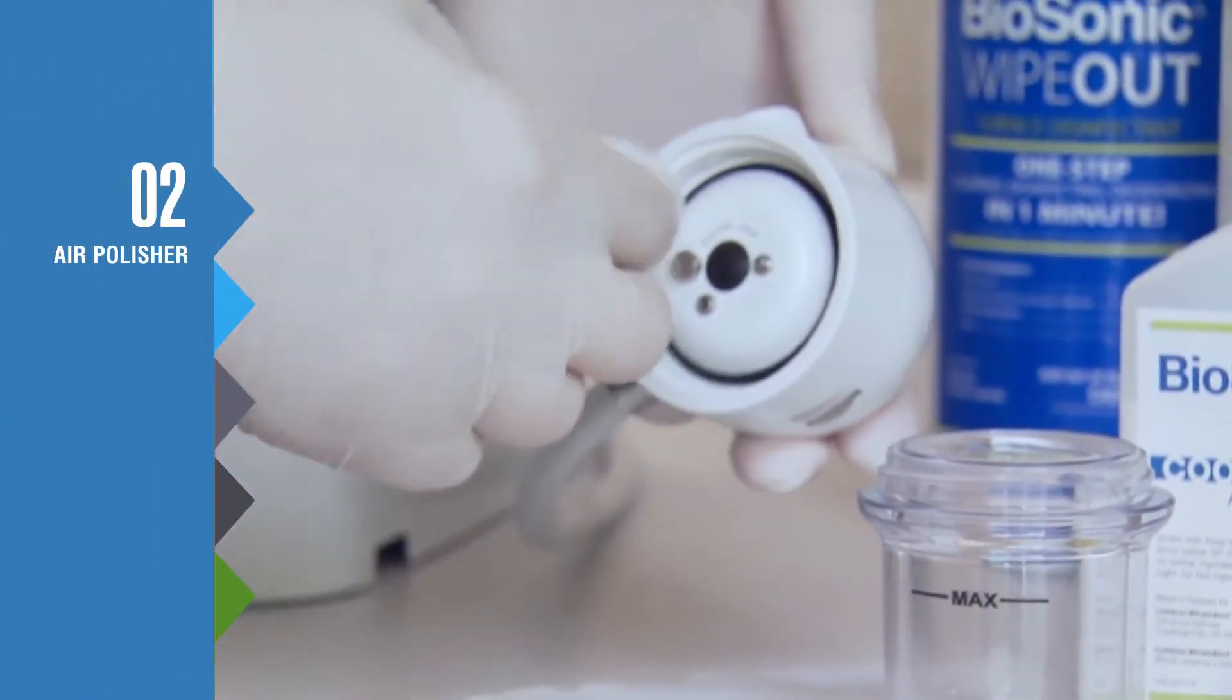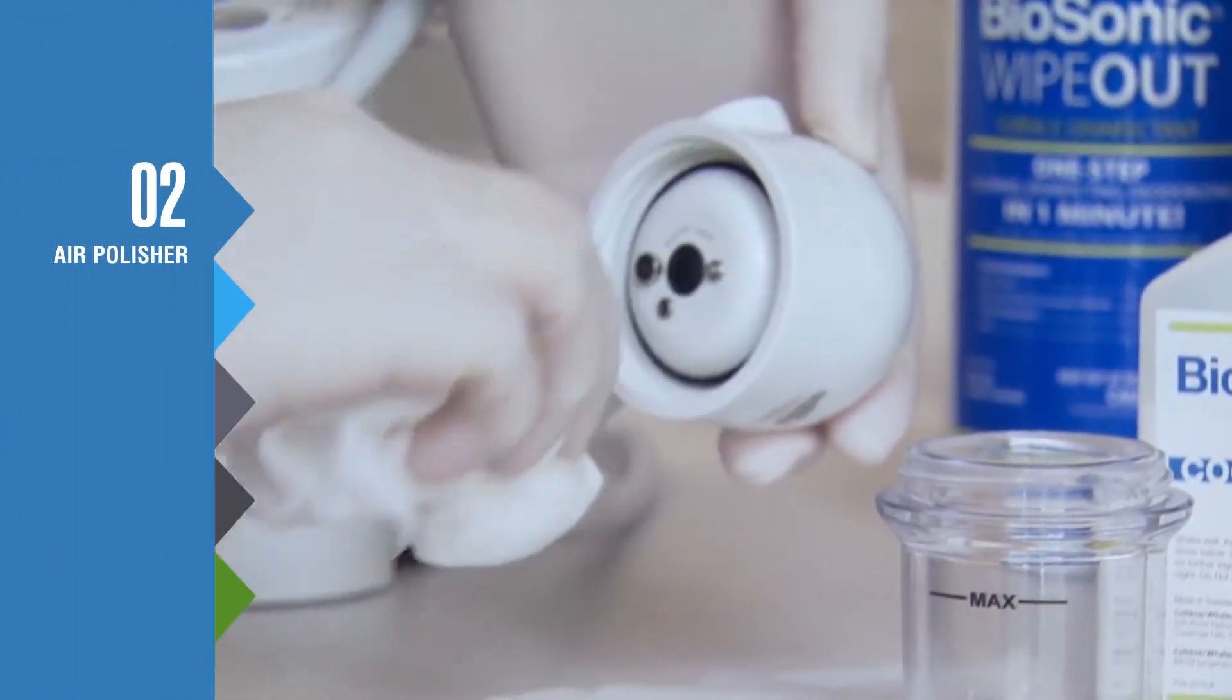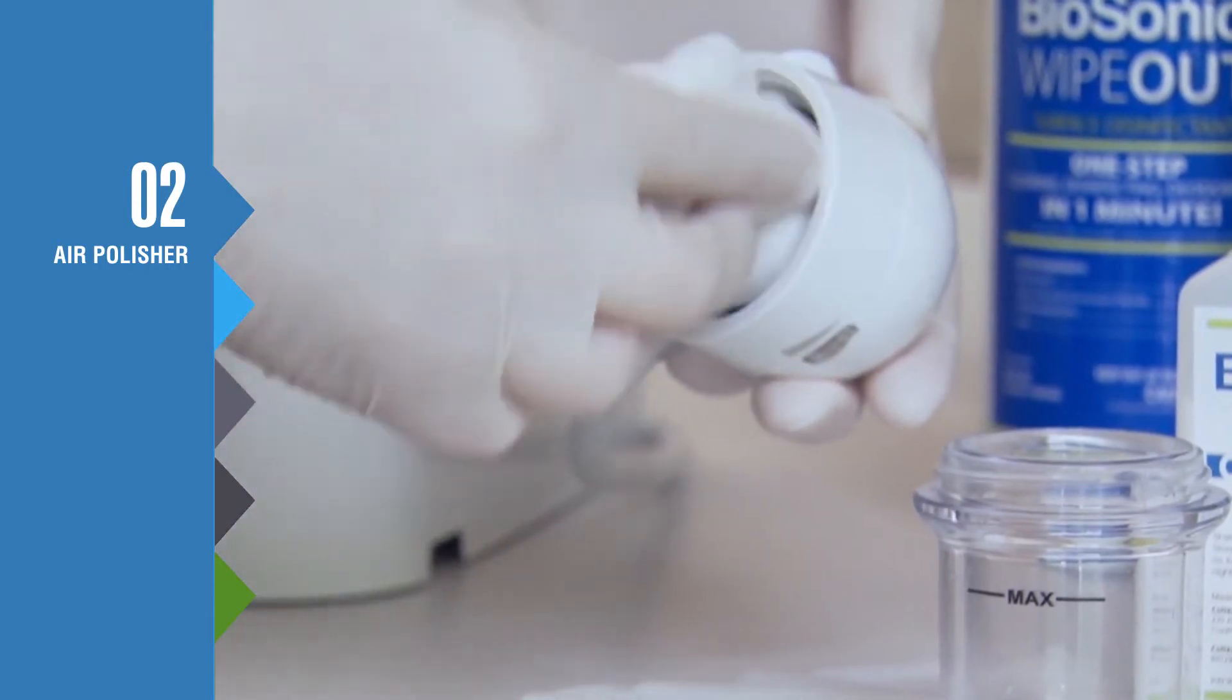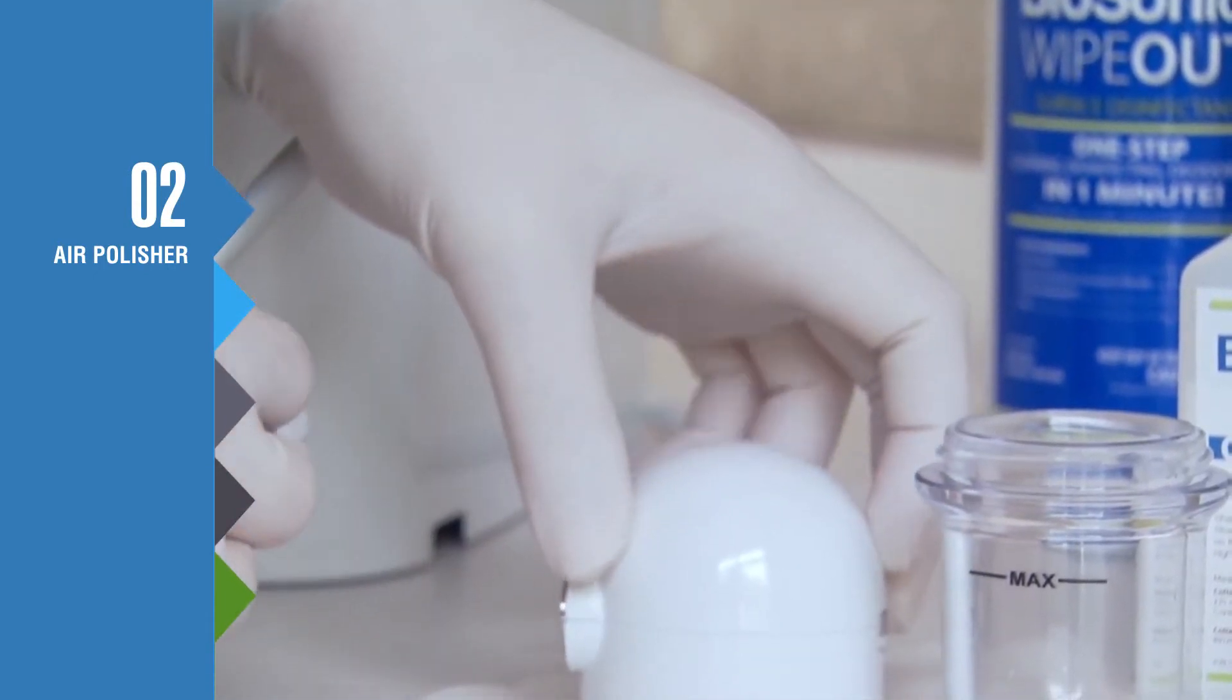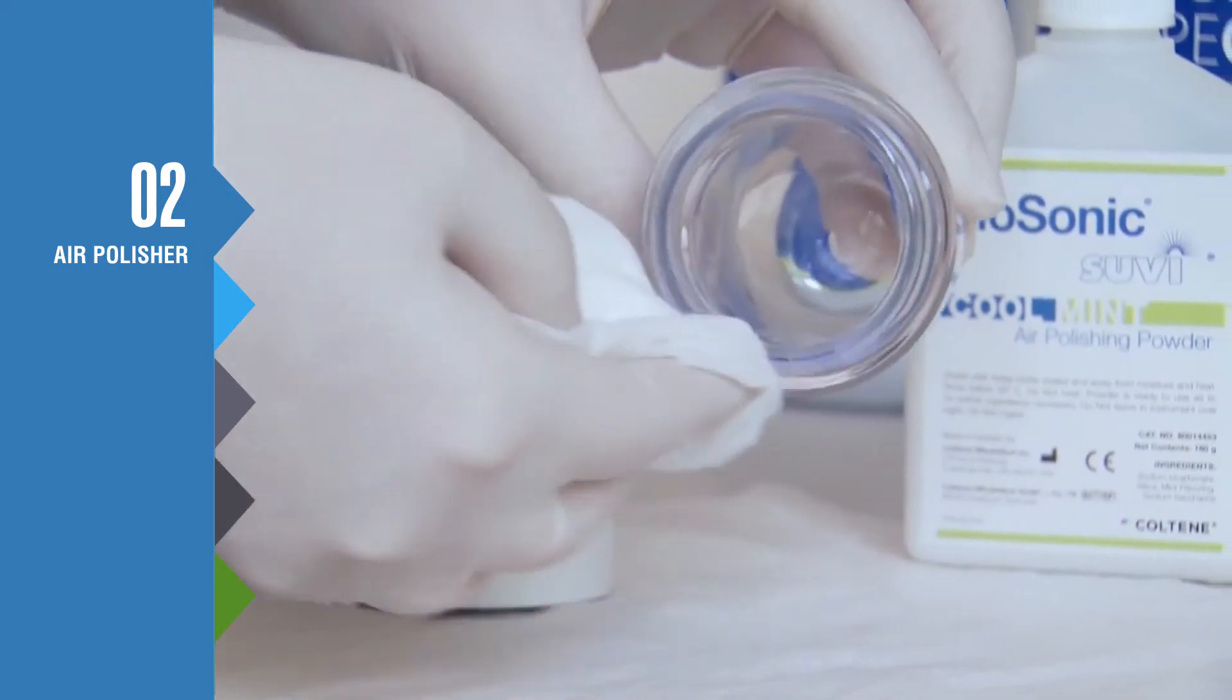To setup your air polisher, always make sure that the powder cap O-ring is clean and in position. Use a soft cloth to wipe off any powder left on the ring.